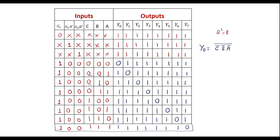This is the explanation of the 74138 IC, which is a 3-to-8 decoder. Thank you for watching.